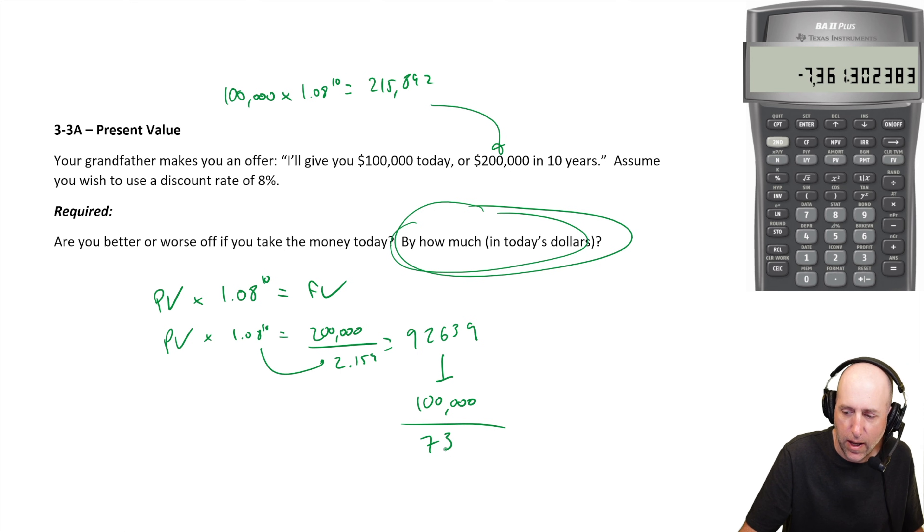It's a difference of $7,361. So you are $7,361 better off if you take the $100,000 today. So that is the answer to the question.